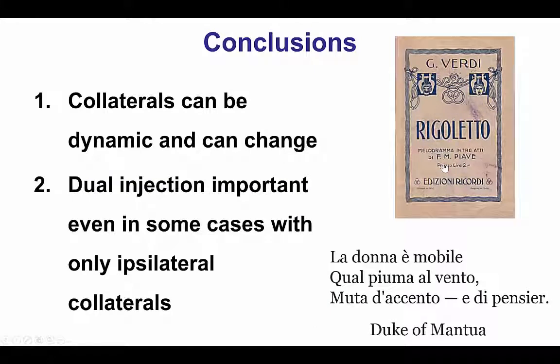In the opera Rigoletto, the Duke of Mantua sings 'La donna è mobile,' meaning that women change their mind all the time — which is also true for collaterals. Collaterals can be dynamic and can easily change, and therefore doing dual injection is important, even in cases where only ipsilateral collaterals appear to exist. Thank you.